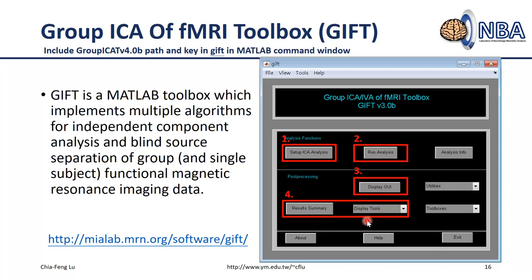You can use the GIFT toolbox to perform group ICA analysis. If you only have one single-subject dataset, you can still use the same toolbox — the operating procedure is exactly the same.